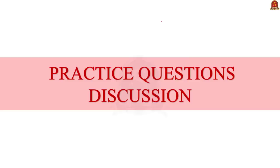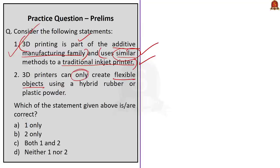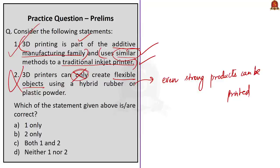Now let us move to the practice questions discussion. Our first question is based on 3D printing. Statement 1: 3D printing is part of the additive manufacturing family and uses similar methods to a traditional inkjet printer — both halves are correct, making this statement correct. Statement 2: 3D printers can only create flexible objects using a hybrid rubber or plastic powder — this is incorrect, as 3D printers have extreme flexibility and can also print rigid materials like sunglasses and extremely strong industrial products using carbon fiber and metallic powders. Since the question asks for correct statements, the answer is option A — statement 1 only.